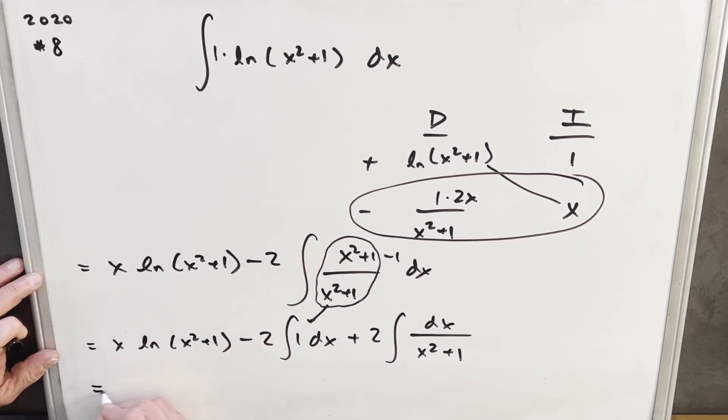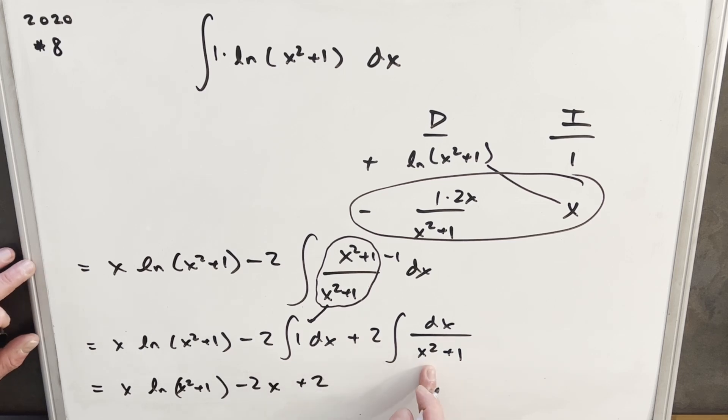So then for our final solution, we're going to have x ln x squared plus one minus two. Integral of one, just x, plus two. And this is just arctan. So we're just going to have arctan or inverse tan x plus c.